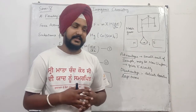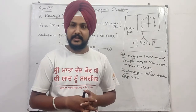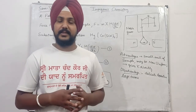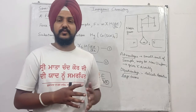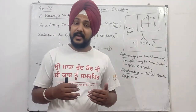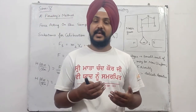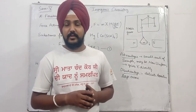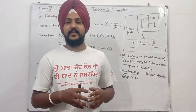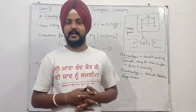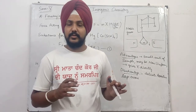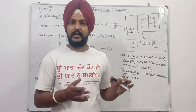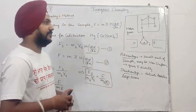Disadvantages भी हैं। पहली disadvantage: delicate apparatus - बहुत ही sensitive apparatus है, हल्का फुल्का damage भी इसको खराब कर सकता है, इसलिए बहुत carefully use करना होता है। Second disadvantage: large errors - small amount of sample और large magnetic field use होती है जिस वजह से sample कई बार excessively magnetized हो जाता है और large errors देखने को मिलते हैं। Operator carefully use न करे तो experiment में errors आ जाते हैं।